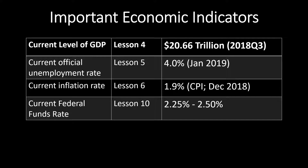The data that came out today has a one-month lag, so the January data came out today, the first Friday of February. The current inflation rate, which I pulled from the CPI and which we'll talk about in Lesson 6, is 1.9 percent. The current federal funds rate — an interest rate for overnight loans between banks, which we'll talk about in Lesson 10 — is currently in the range of 2.25 to 2.5 percent.